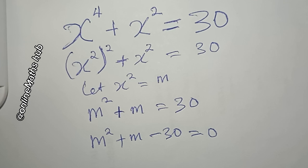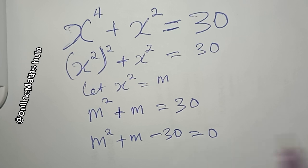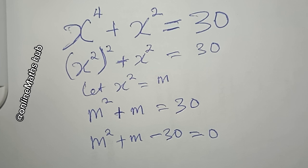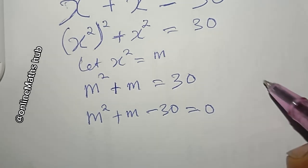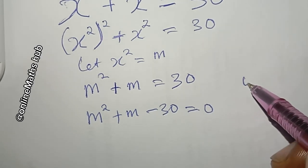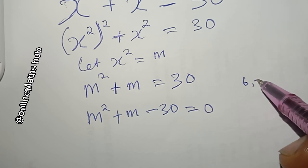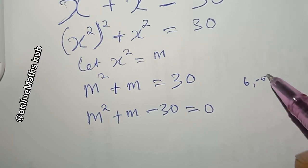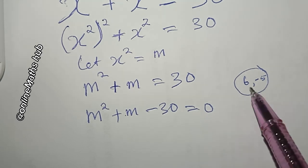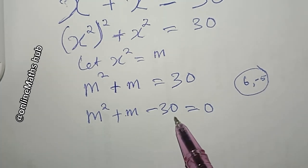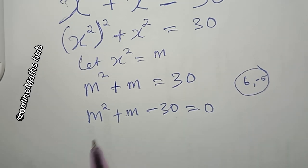My job next is to find two values that when multiplied give negative 30 and when summed give positive 1. This is a quadratic equation which I can factorize. The two factors of negative 30 are positive 6 and negative 5 — subtracting gives positive 1 and multiplying gives negative 30.